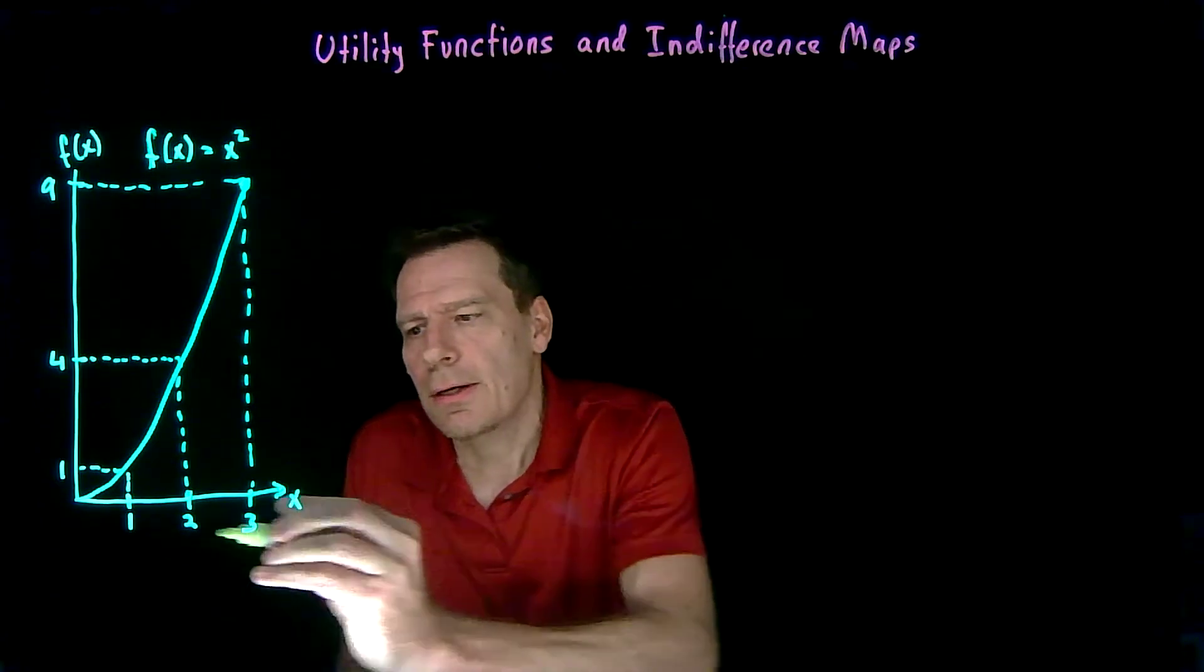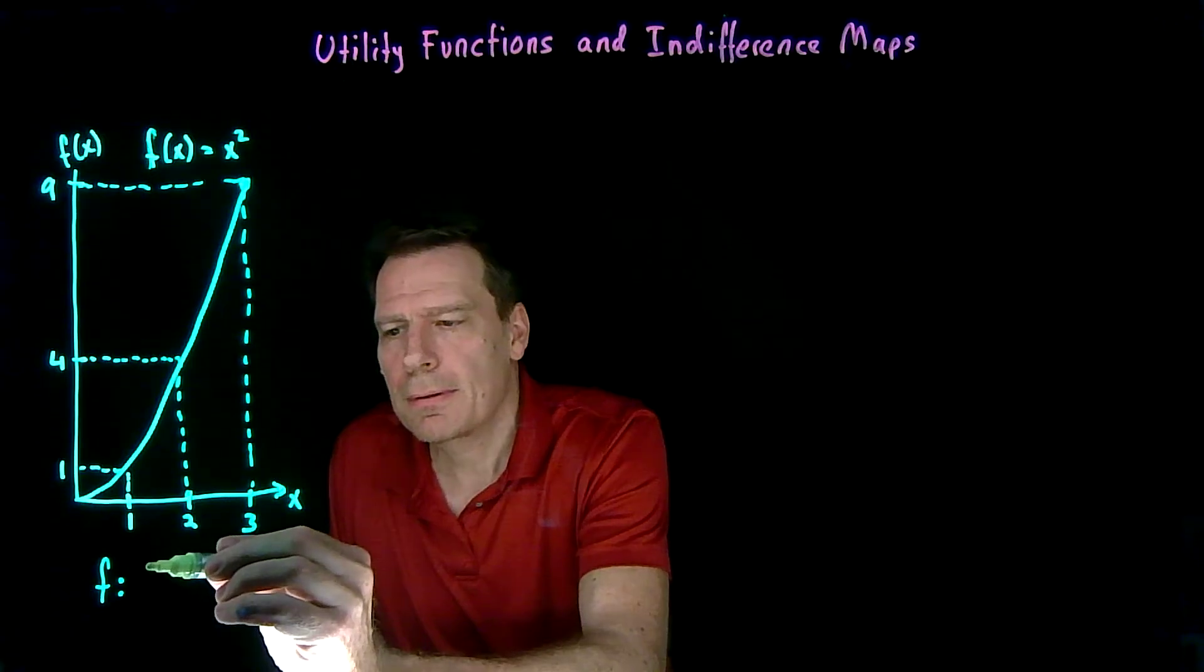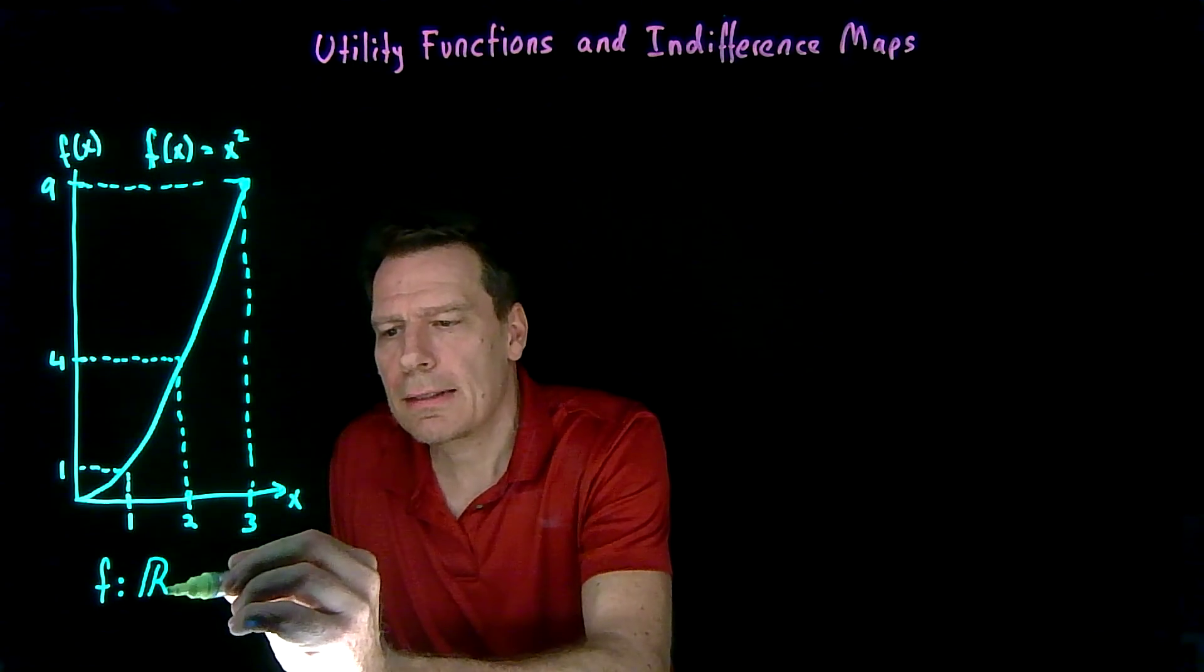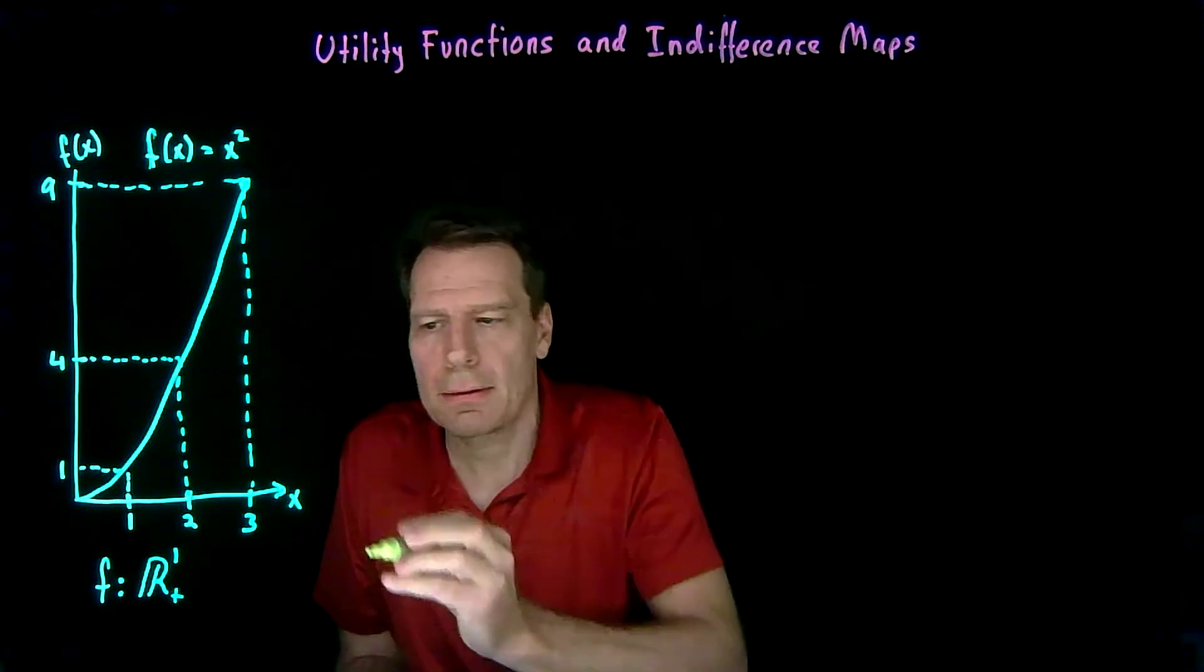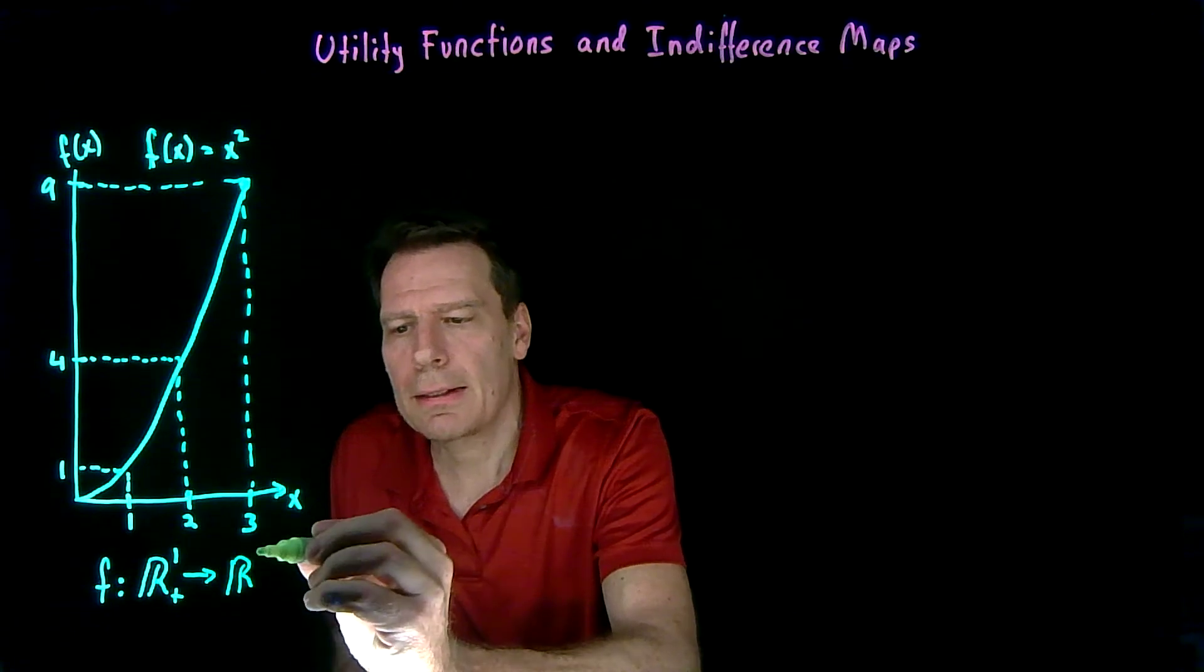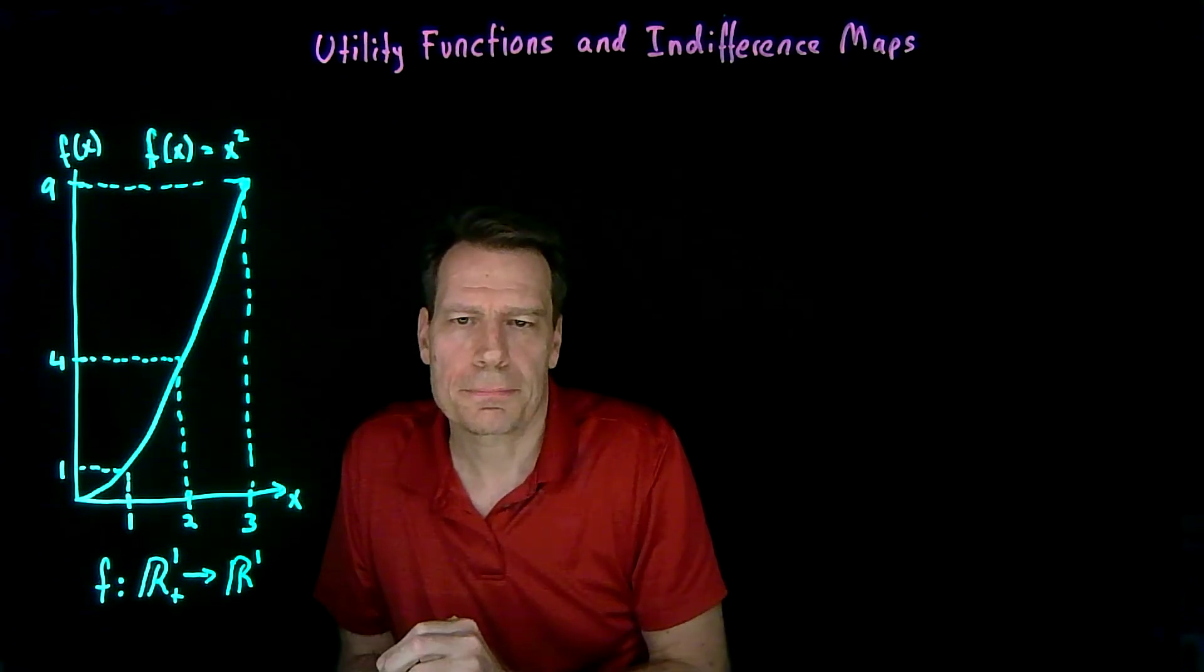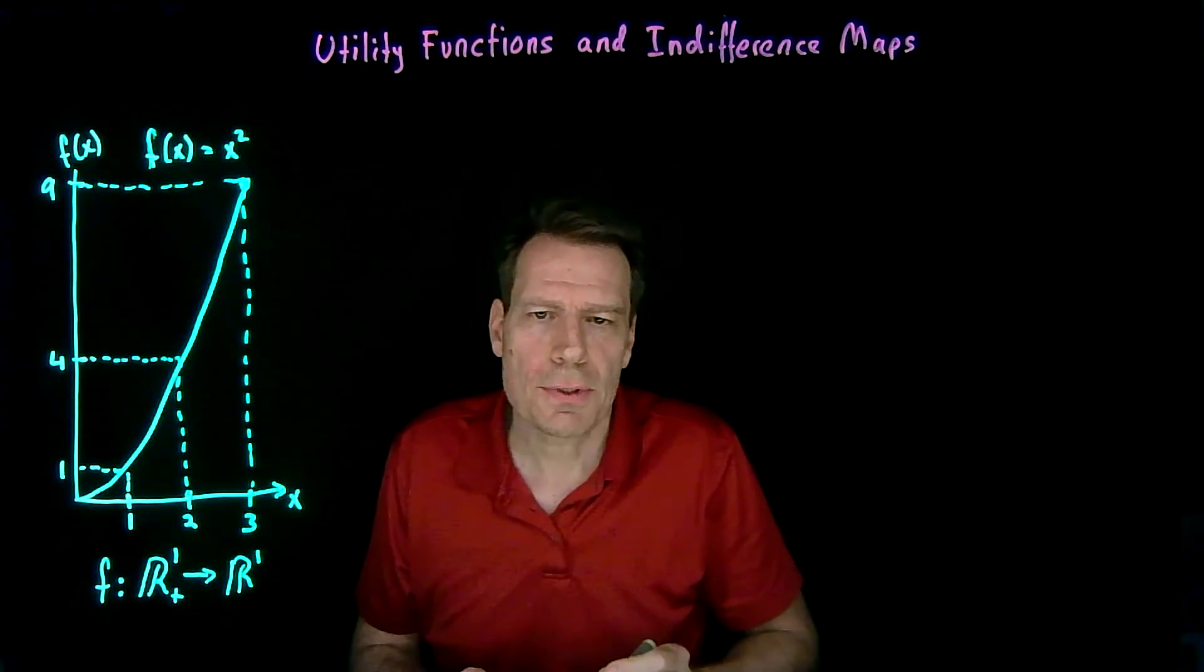So in this case, we have a function that maps points that lie in one-dimensional space, in fact in the positive part of that one-dimensional space, into numbers that also lie in one-dimensional space. So that's the simplest kind of function we could think of.